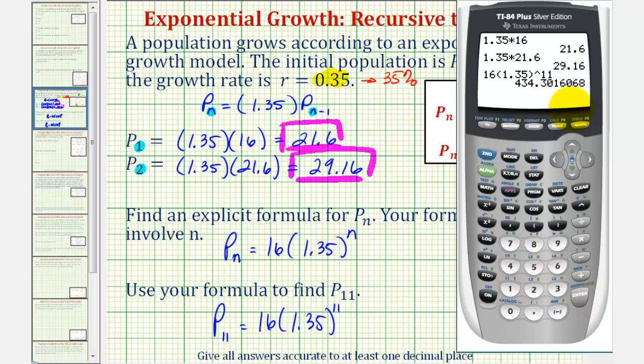The directions say to round to at least one decimal place. Rounding to the tenths, this is approximately 434.3.